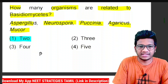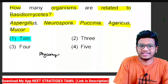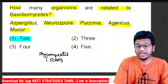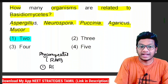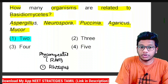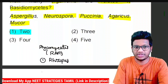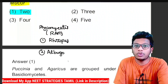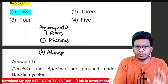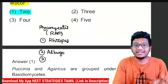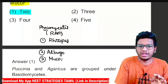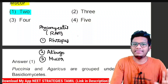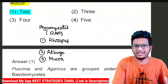Let's start with Phycomycetes. The mnemonic here is RAM. R for Rhizopus — don't forget, Rhizopus comes under Phycomycetes. A for Albago — Albago is a parasite on mustard. And M means Mucor. So Phycomycetes has three examples: Rhizopus, Albago, and Mucor.